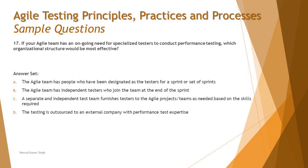Moving on to Question 17: if your agile team has an ongoing need for specialized testers to conduct performance testing, which organizational structure would be most effective? This question is about how teams and specialized testing functions are organized — centralized, distributed, insourced, outsourced, or embedded. Specialized members can work externally to agile teams, be embedded, work in parallel, or be engaged only at the end of a release cycle.